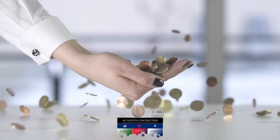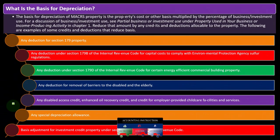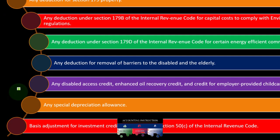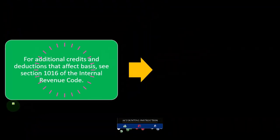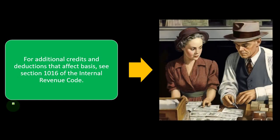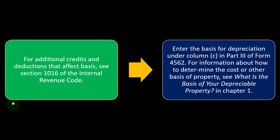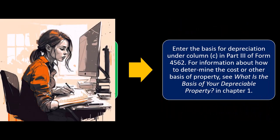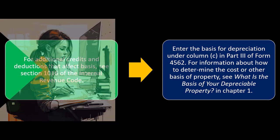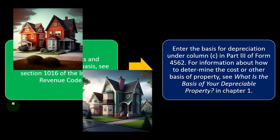Basis adjustment for investment credit property under Section 50(c) of the Internal Revenue Code. For additional credits and deductions that affect basis, see Section 1016 of the Internal Revenue Code. Enter the basis for depreciation under column C in Part III of Form 4562. For information about how to determine the cost or other basis of property, see 'What Is the Basis of the Depreciable Property' in chapter one.